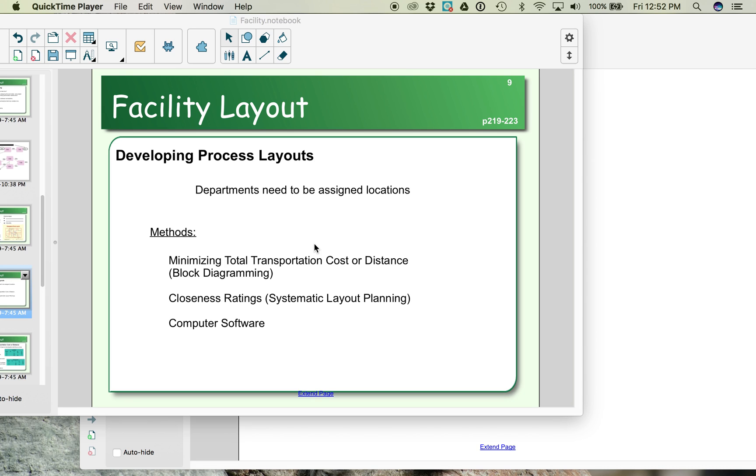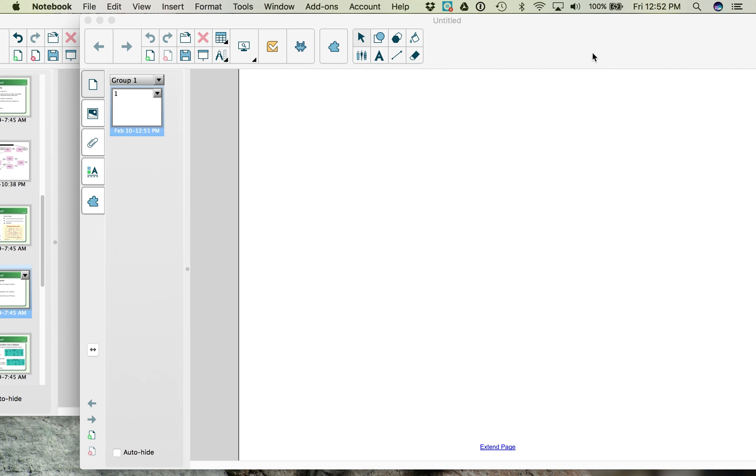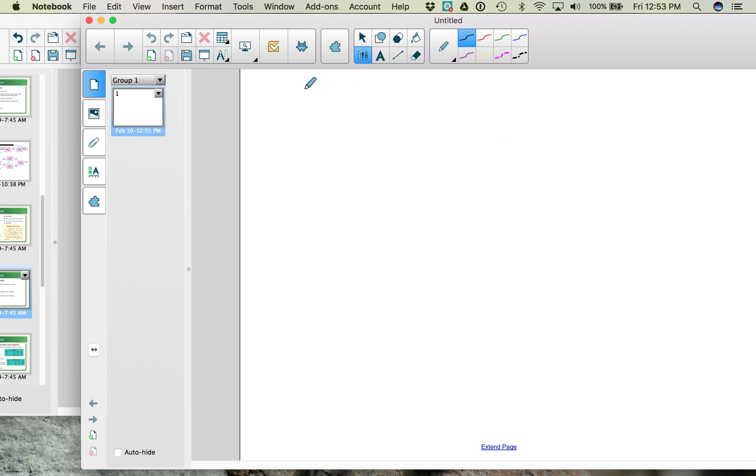If you have a process layout, then your locations within your facility are going to be laid out so that your materials, your work in process, can go to different locations depending on what needs to be done.